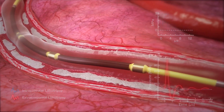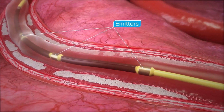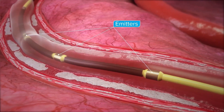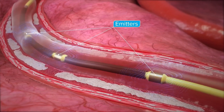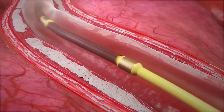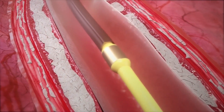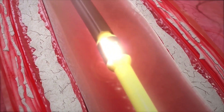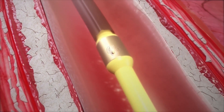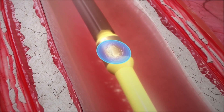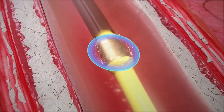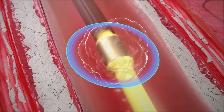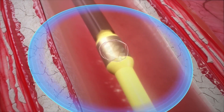To create an IVL shock wave, a series of emitters are arrayed within a balloon angioplasty catheter. The emitters fire electrical impulses across electrodes, which result in a plasma discharge, creating a vapor bubble that rapidly expands spherically, creating the initial shock wave.